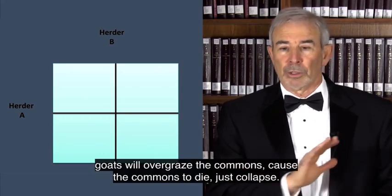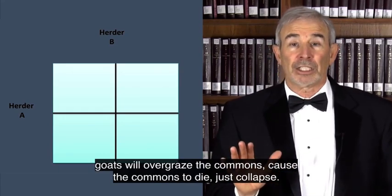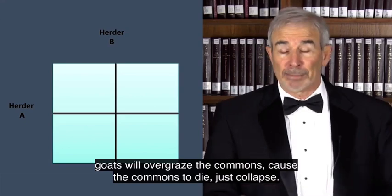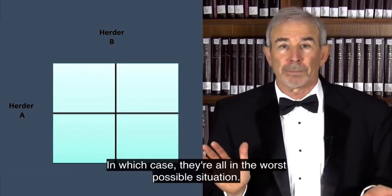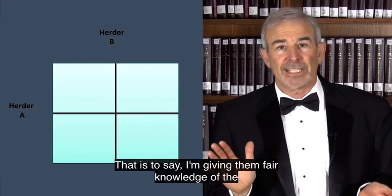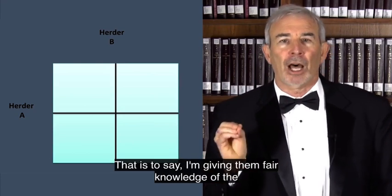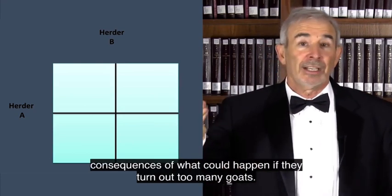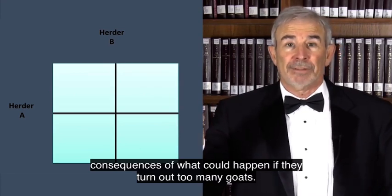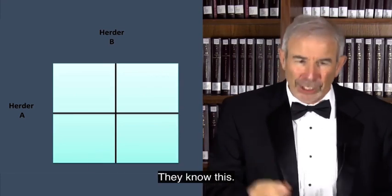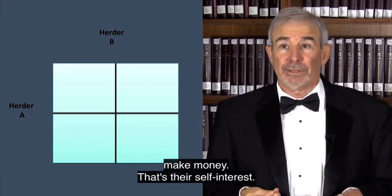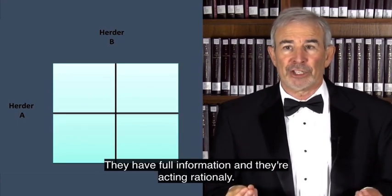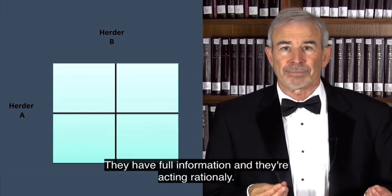It's a common open access commons in this two-person society. There's herder A and there's herder B. Now they know this. They know that if they put out too many goats, the goats will overgraze the commons, cause the commons to die, just collapse, maybe not just that year, but forever, in which case they're all in the worst possible situation. That is to say, I'm giving them full knowledge of the consequences of what could happen if they turn out too many goats. They know this. They also want to make money. That's their self-interest. They have full information and they're acting rationally.